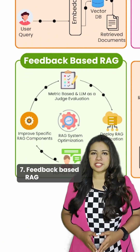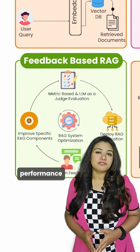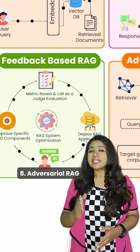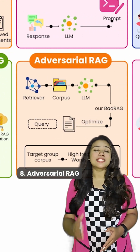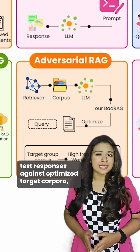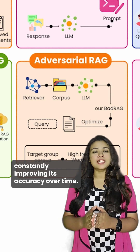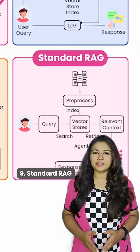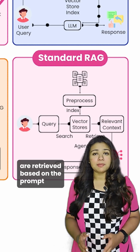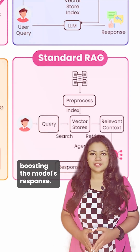7. Feedback-based RAG: uses human feedback to optimize performance and make future responses more accurate. 8. Adversarial RAG: tests responses against optimized target corpora, constantly improving its accuracy over time. 9. Standard RAG: a basic approach where documents are retrieved based on the prompt, boosting the model's response.